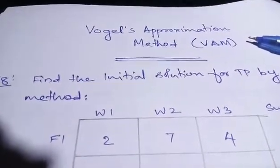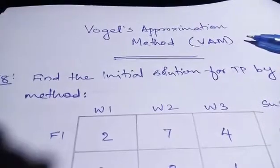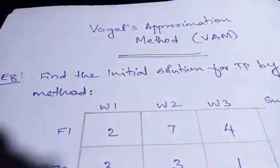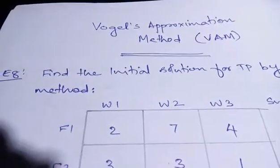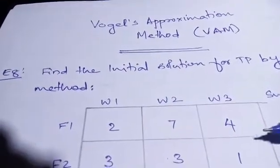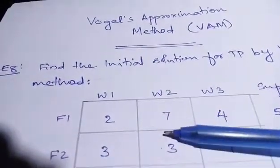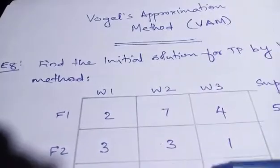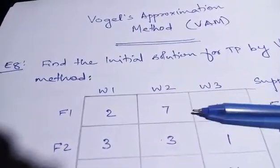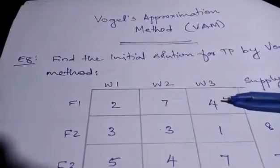This is similar to the least cost method and the northwest method, but with a small difference. In the northwest method, we took the northwest corner cell and allocated to that and proceeded. In the least cost method, we selected the least value and allocated to that.